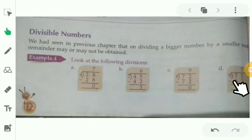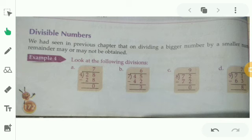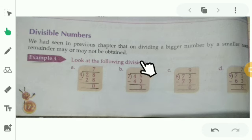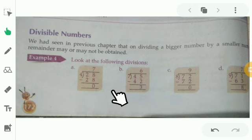Next, D: 71 divided by 9. 9 divides 71 — is it exactly? No, not exactly. Nearly, 9 sevens are 63. So subtract: 1 minus 3 is not possible, so take a borrow — 11 minus 3 is 8. What is the remainder here? The remainder is 8. So, what is division? Dividing a bigger number by a smaller number — the remainder may be 0 or may not be 0. This is called division.